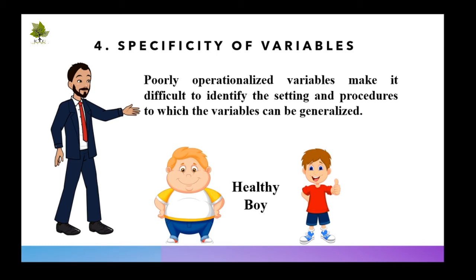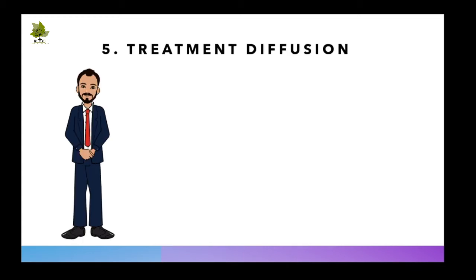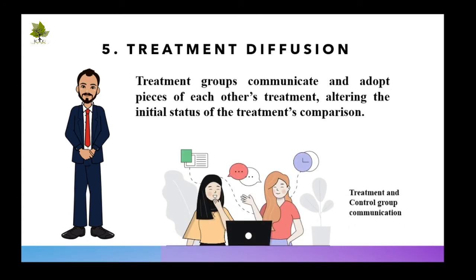Consider the example of a healthy child — how you have defined 'healthy' in your research will define the outcomes of your study. Treatment diffusion is defined as treatment groups communicating and adopting pieces of each other's treatment, altering the initial status of the treatment's comparison.